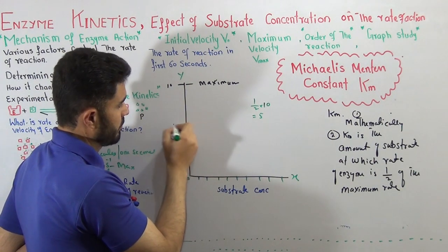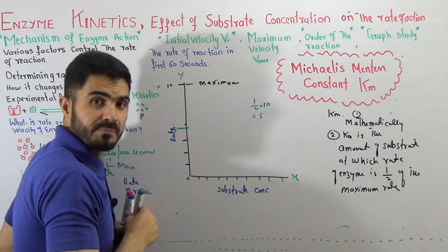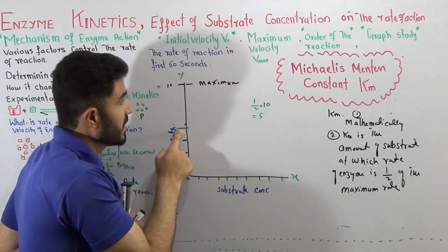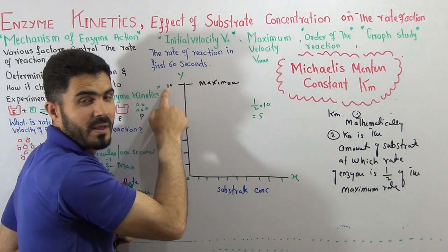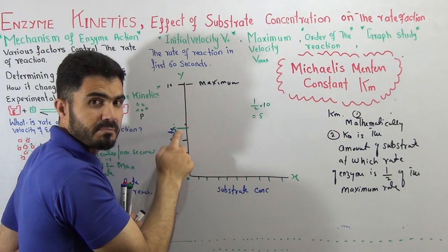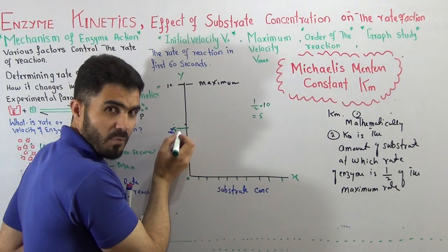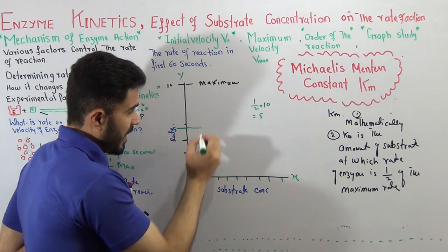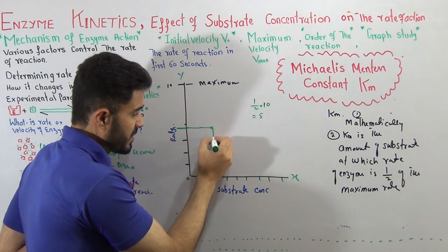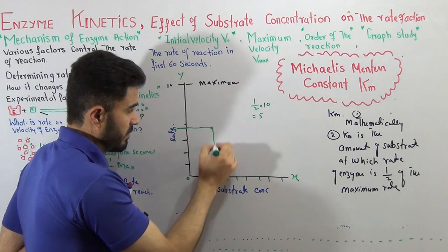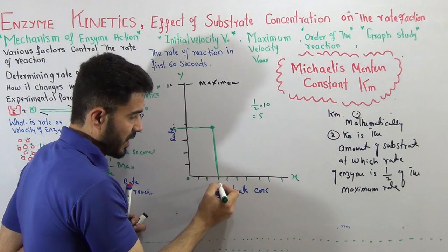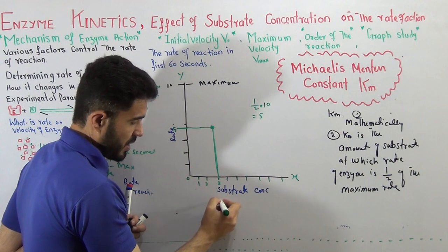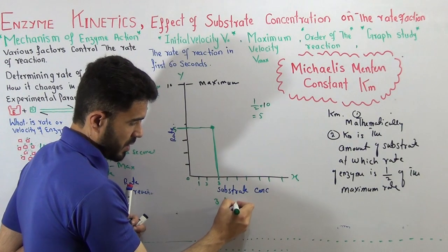So check where five is: zero, one, two, three, four, five. Five will be here. What is this? The rate of the reaction at half of the maximum. This is called Km. At this stage, whatever substrate concentration you have, this substrate concentration will be called the Km. Let's suppose zero, one, two, three - so three substrate is your Km.